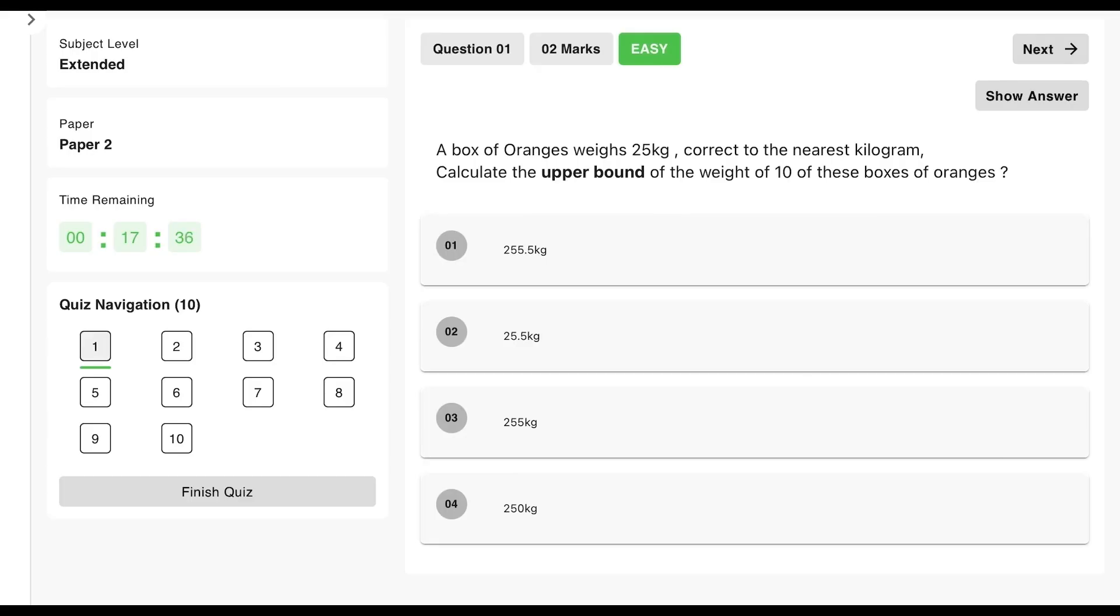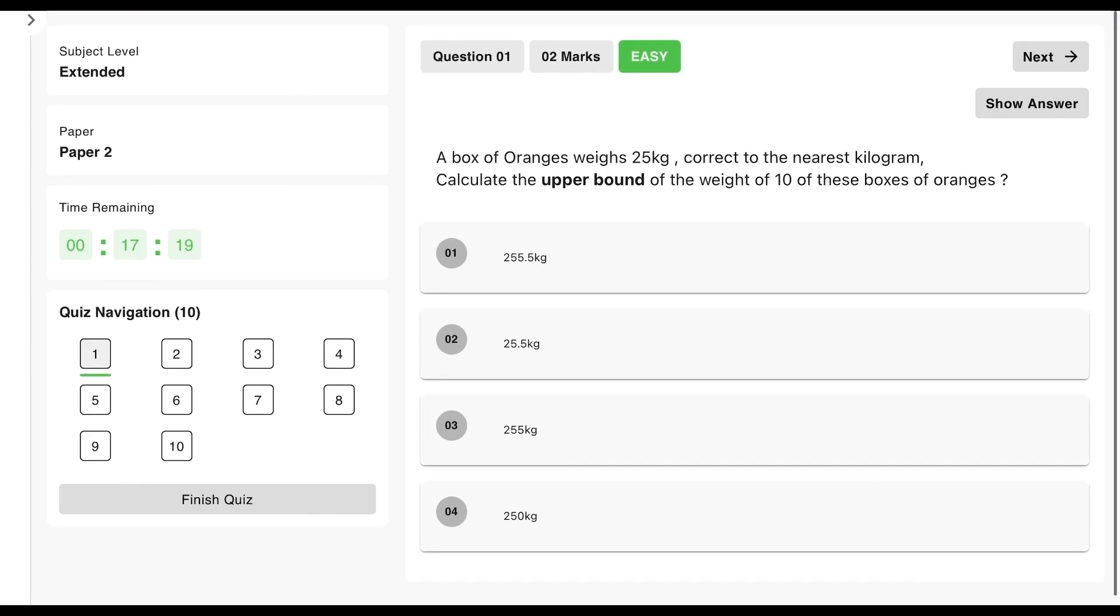All right, so we're going to finish off with a few questions. A box of oranges weighs 25 kilograms correct to the nearest kilogram. Calculate the upper bound of the weight of 10 of these boxes of oranges. So the first thing we need to do here is 25 kilograms is the weight of one box, and we want the upper bound. So that is we want to take it as not 25, we're going to take it as 25.5 kilograms.